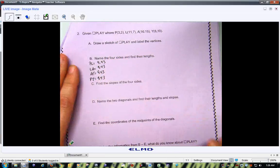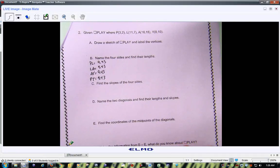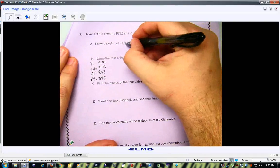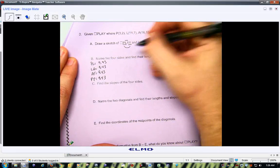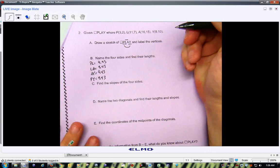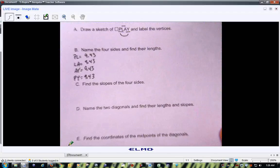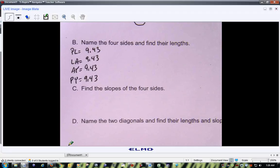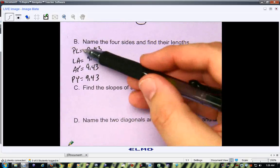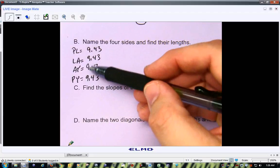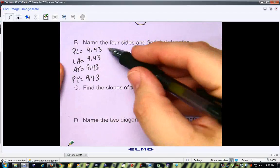For number two, the four sides are PL, LA, AY, and PY. Okay, so those are the four sides. What can we say about all four sides? About the lengths of all four sides?